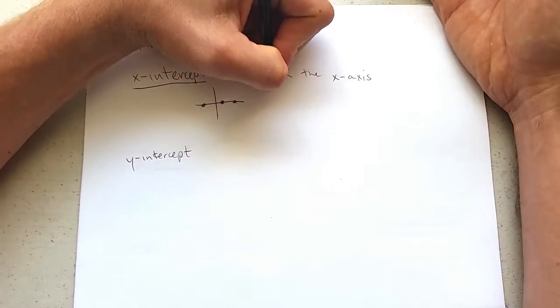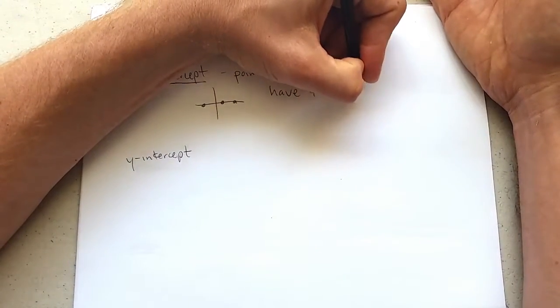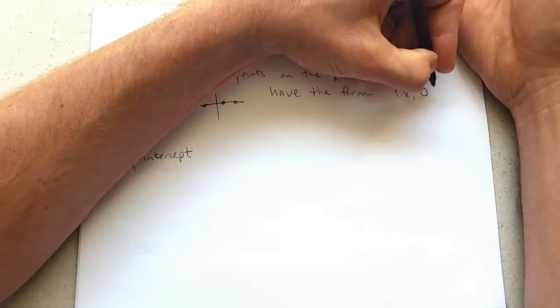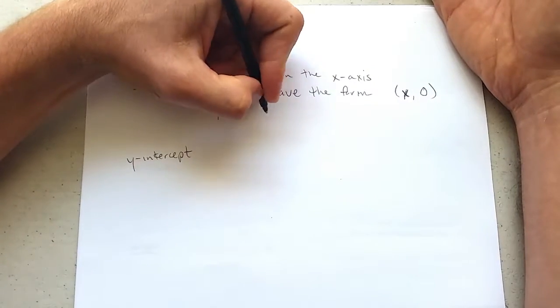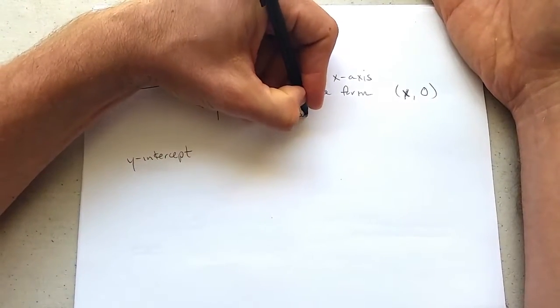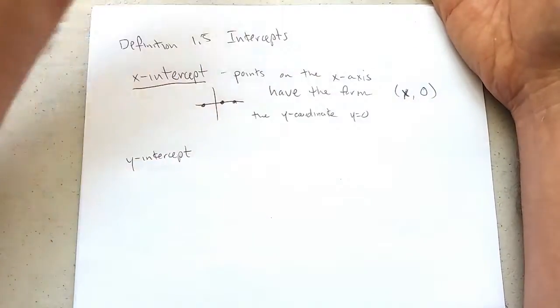So points on the x-axis have the form (x, 0). They have a y-coordinate of y equals zero.